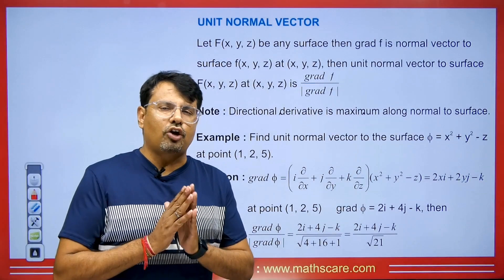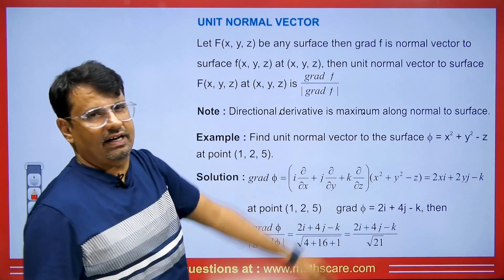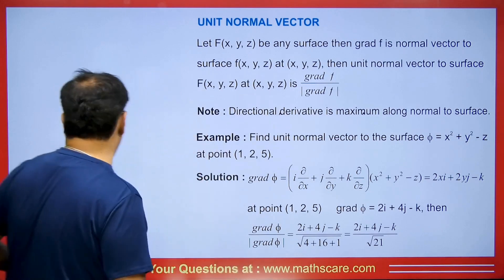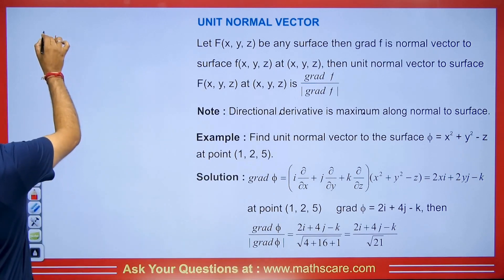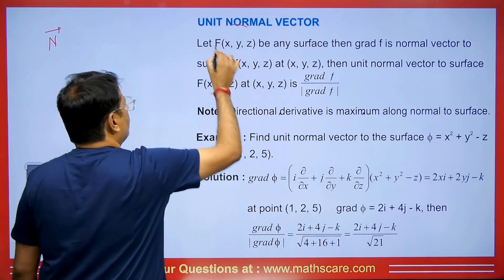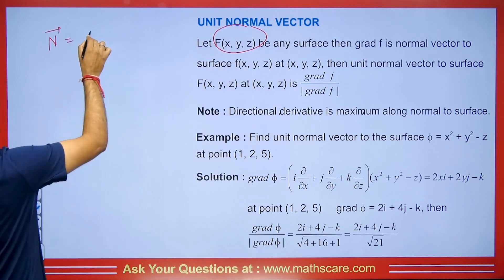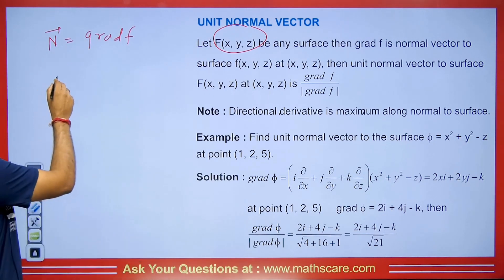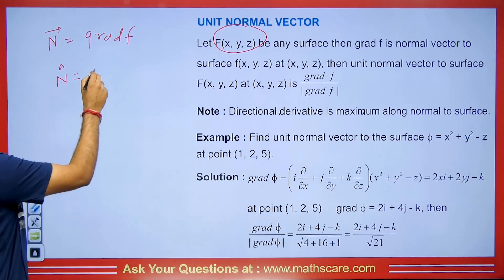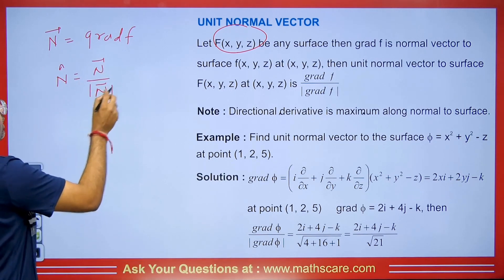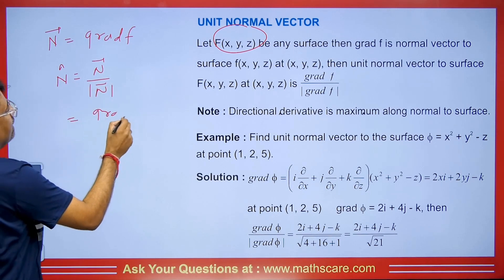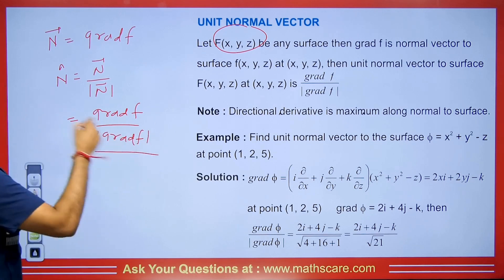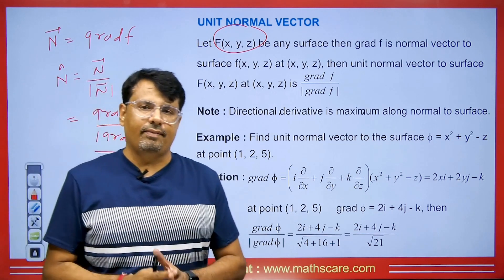First we will discuss the unit normal vector. If we are given any surface and you need to find its unit normal vector, then first we will find the normal vector. We denote this unit normal vector by n̂. If we have a surface already given to us, then find its gradient — that gives the normal vector. To find the unit normal vector, we divide the gradient of f by the mod of gradient f.